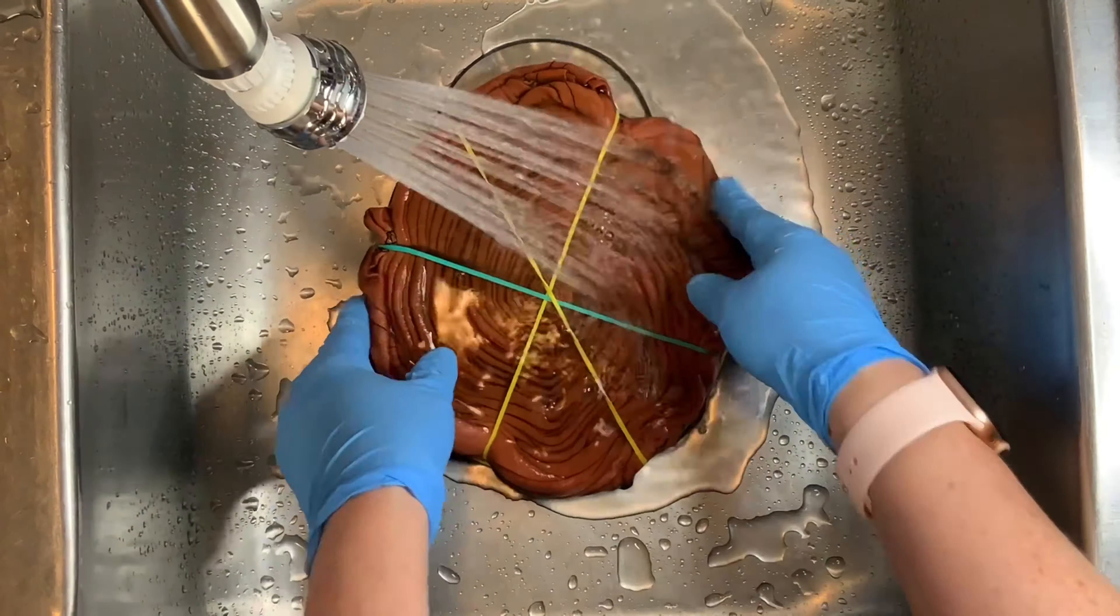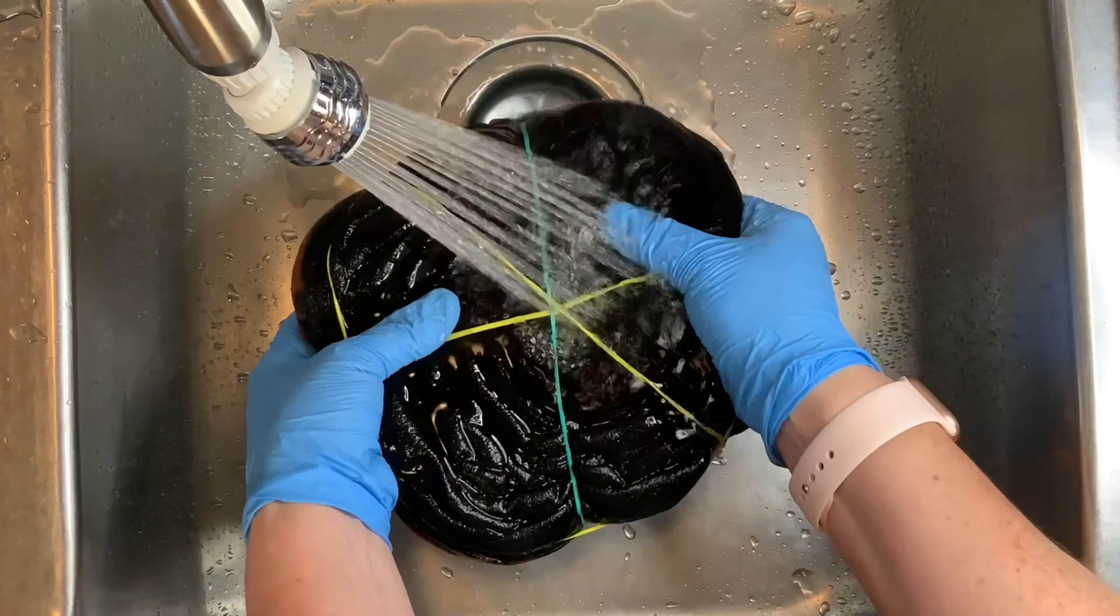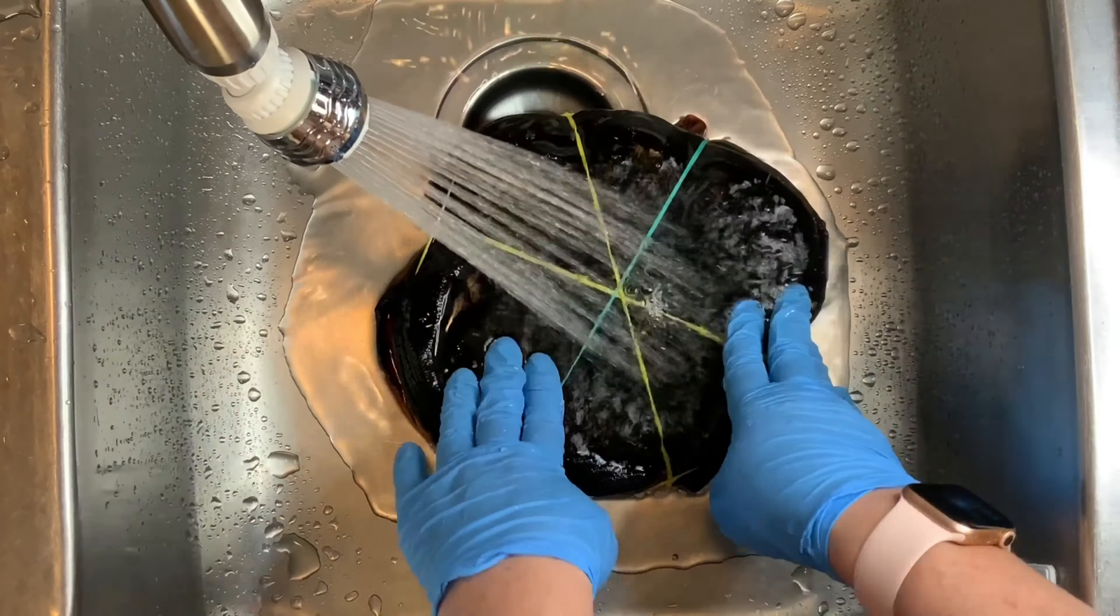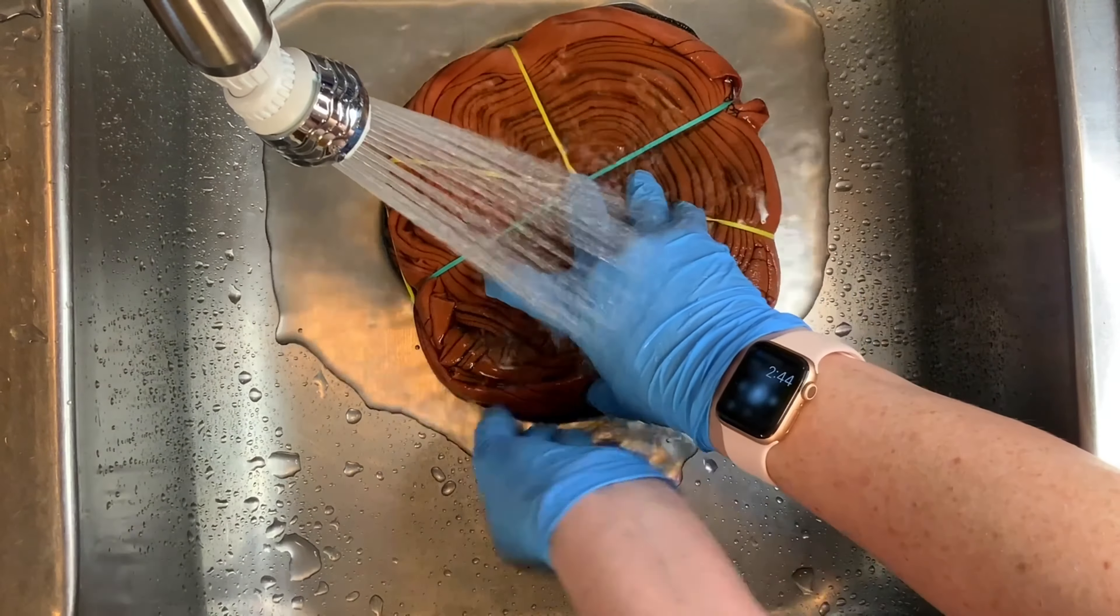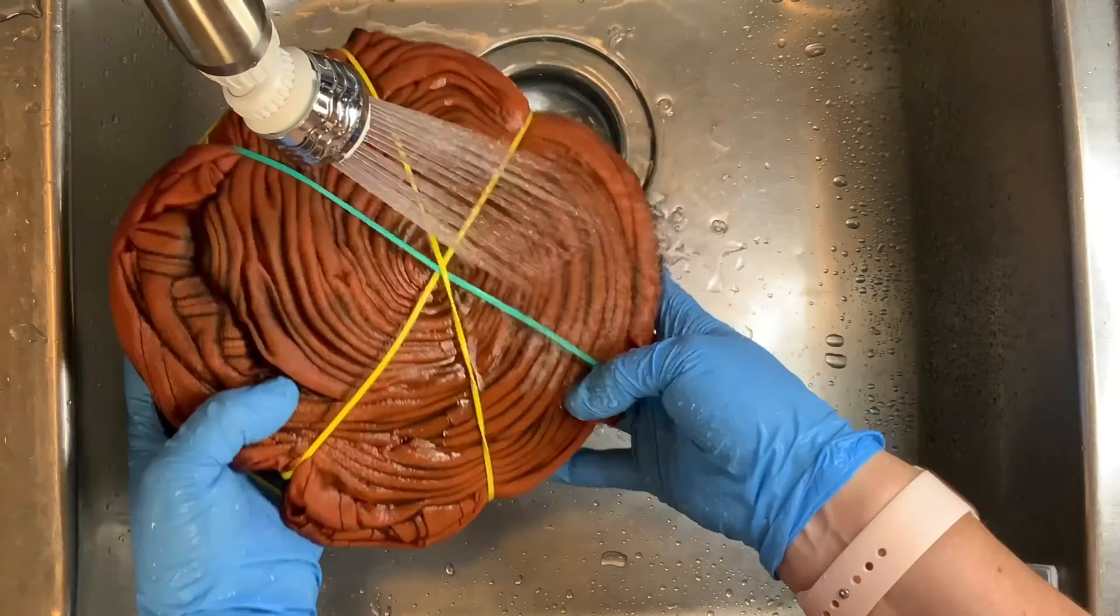I'm using warm water to rinse out any bleach and any peroxide that might be in this shirt. Rinse it very well. Once you have it rinsed the way that you like it, squeeze out as much of the extra moisture that you can.